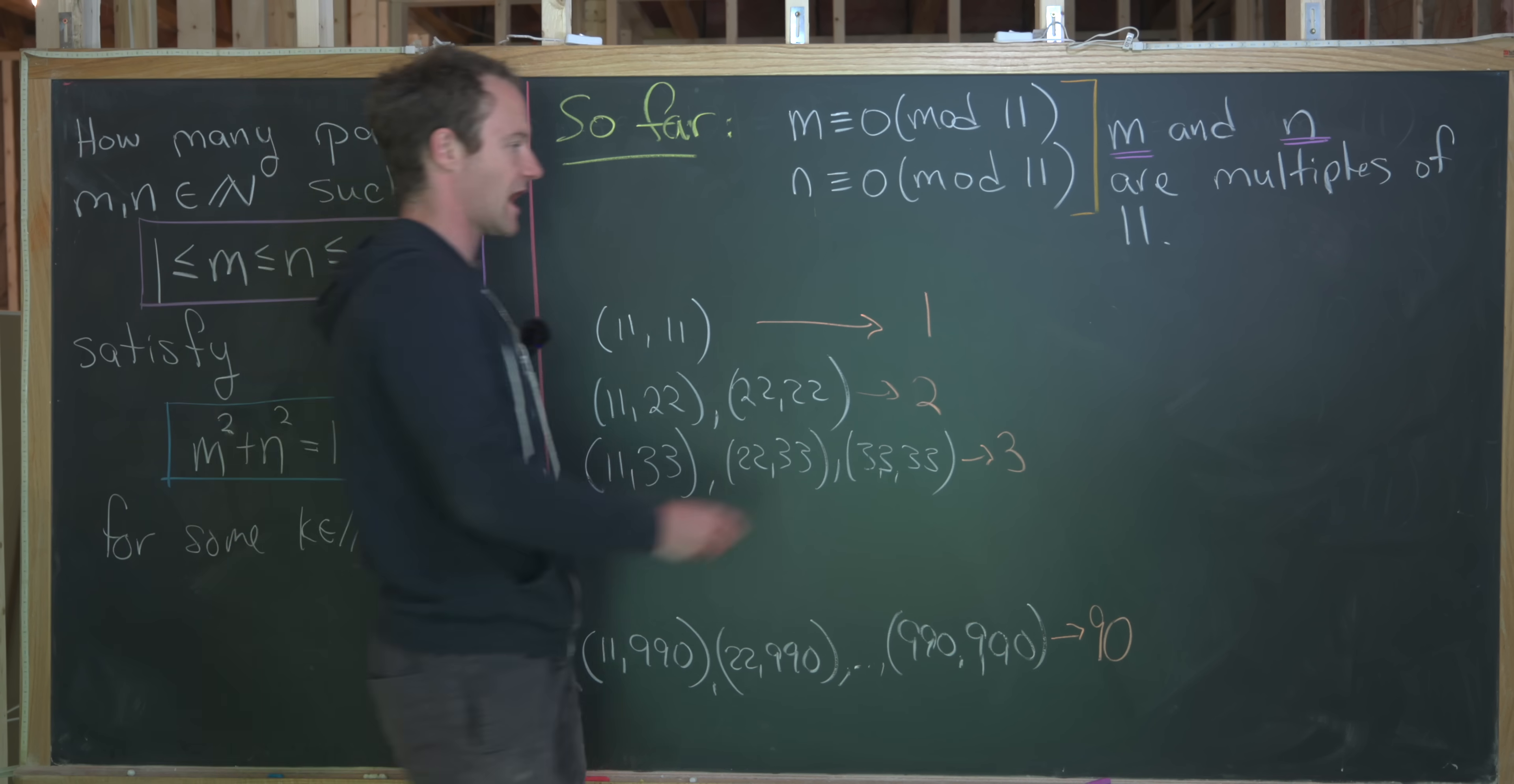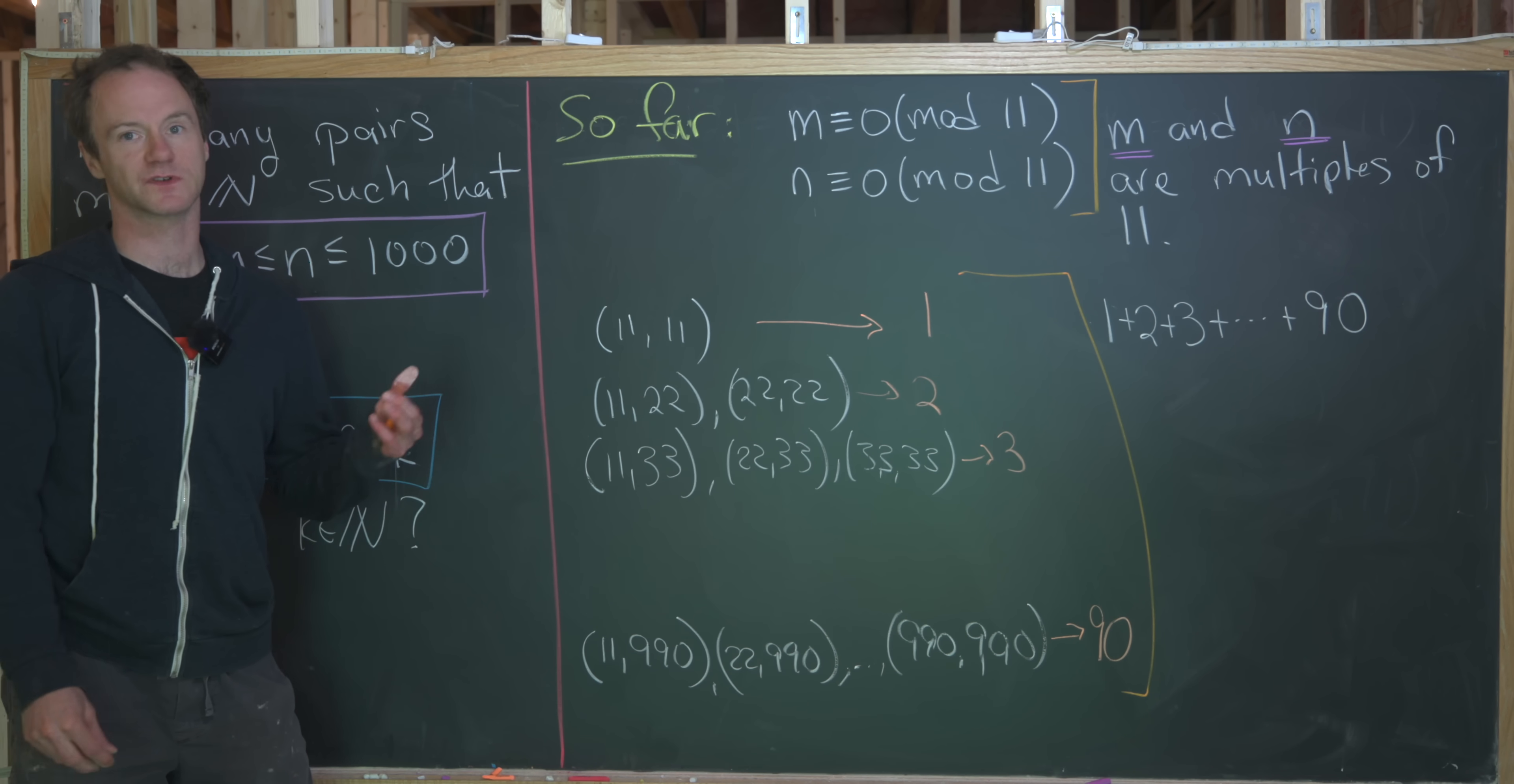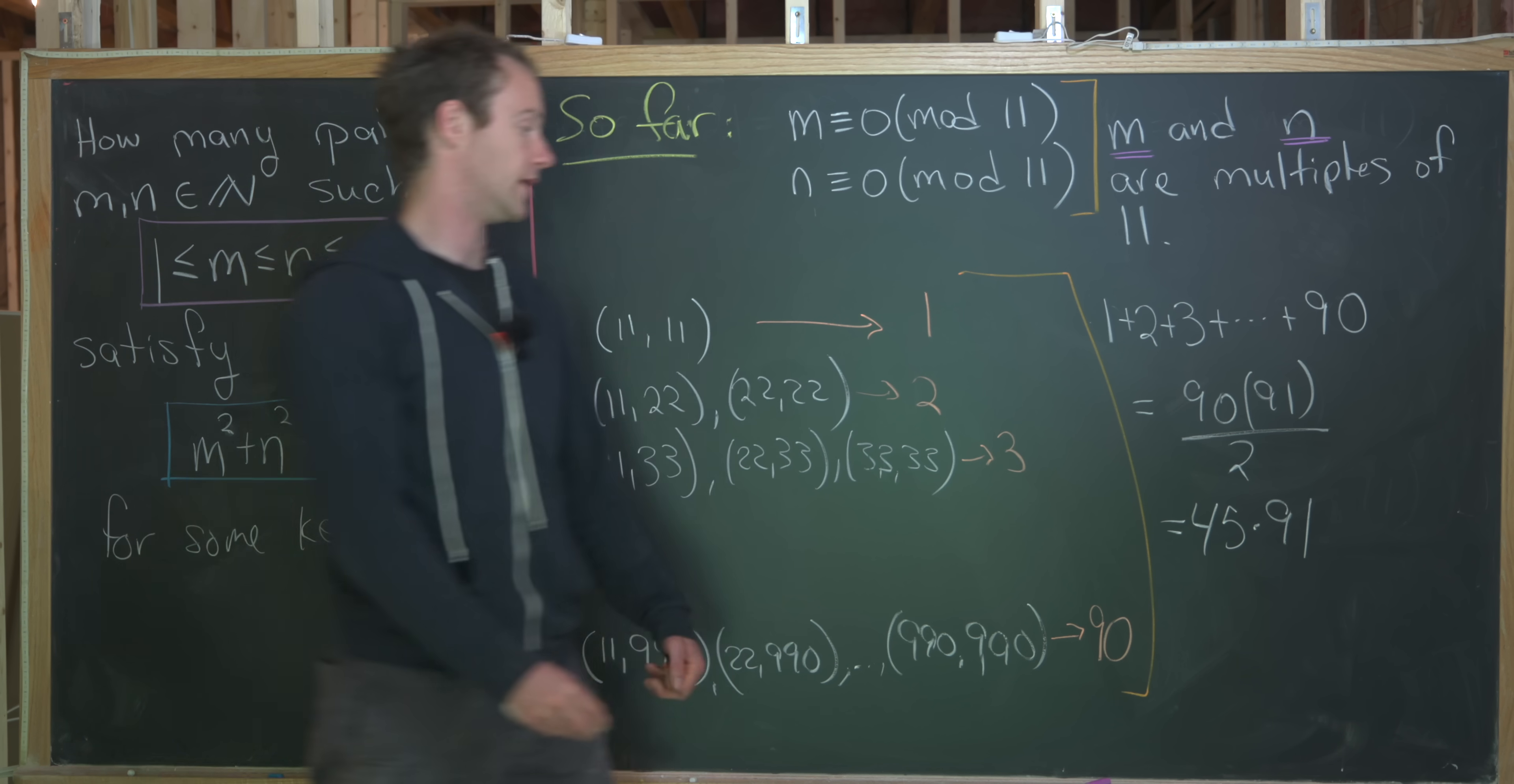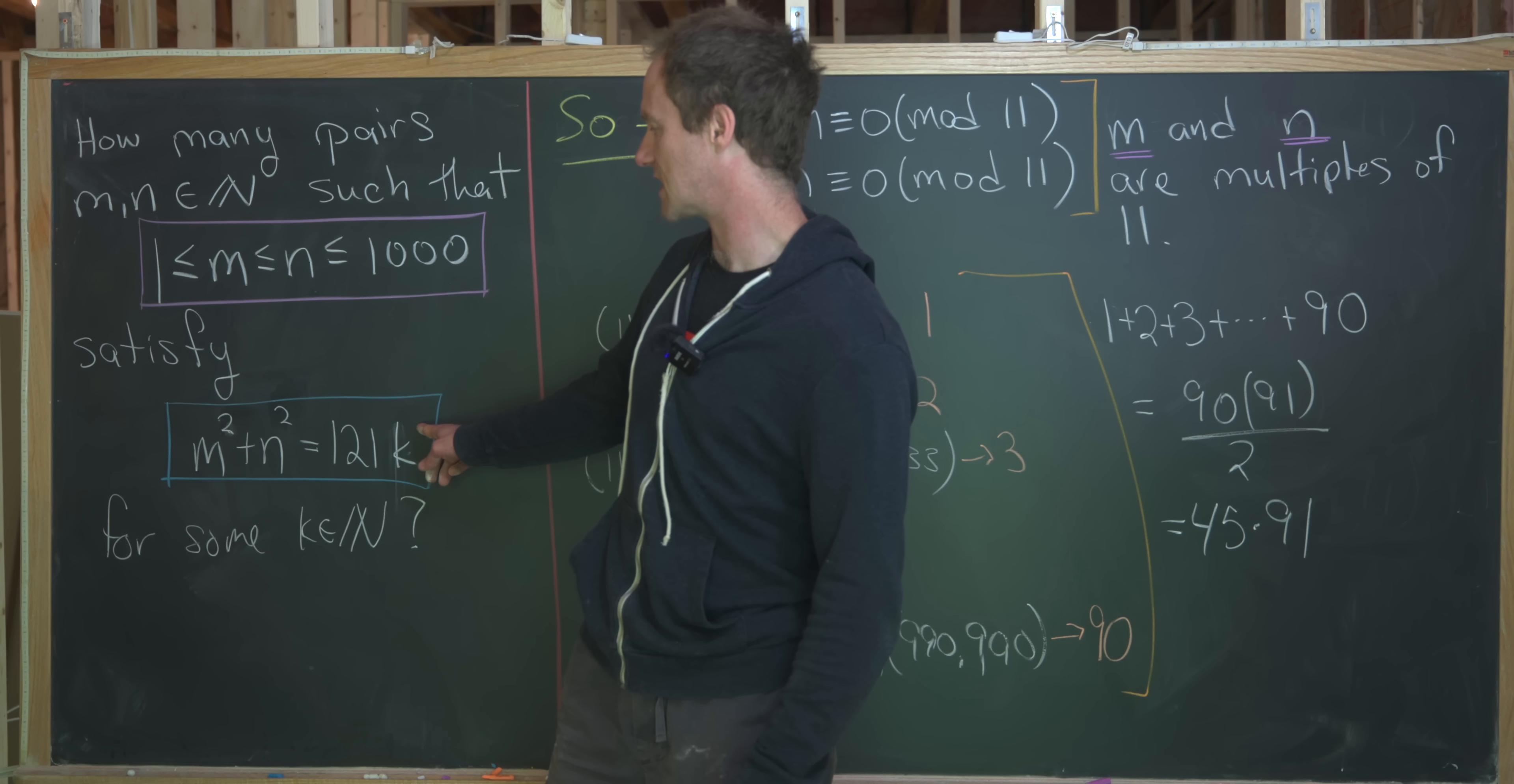Okay, so all together, how many ordered pairs are there? Well, there's one ordered pair from the first row, two from the second row, three from the third row, up to 90 from the 90th row. But there's a well known closed form for numbers like that. That's something called a triangular number. And the closed form is equal to 90 times 91 over 2. In other words, this is 45 times 91. Those are the number of possibilities that satisfy this first condition.